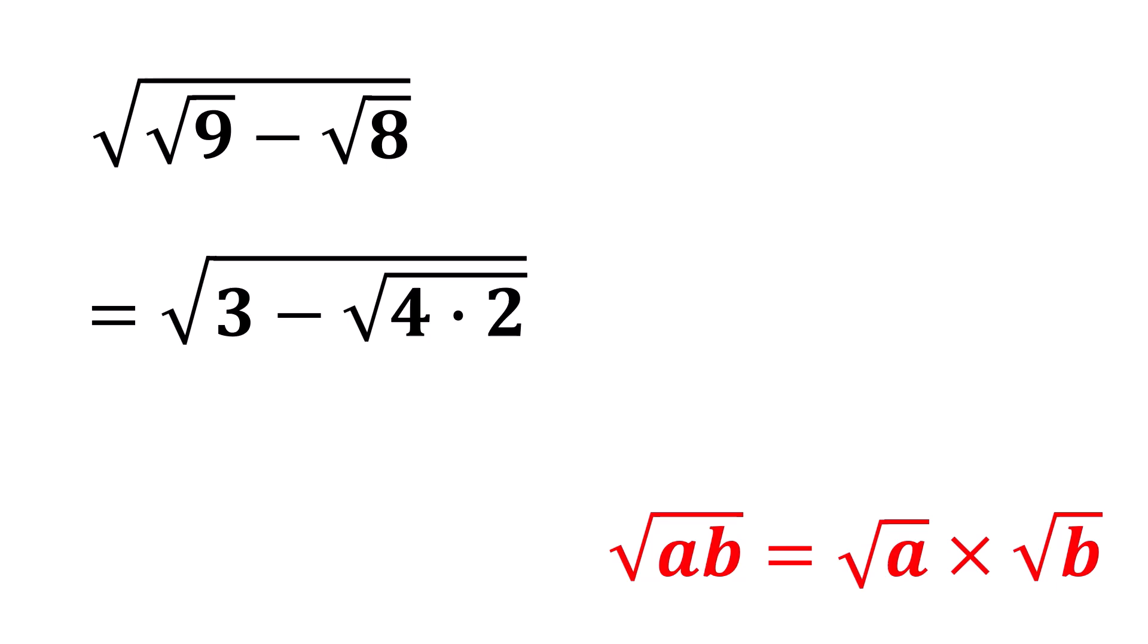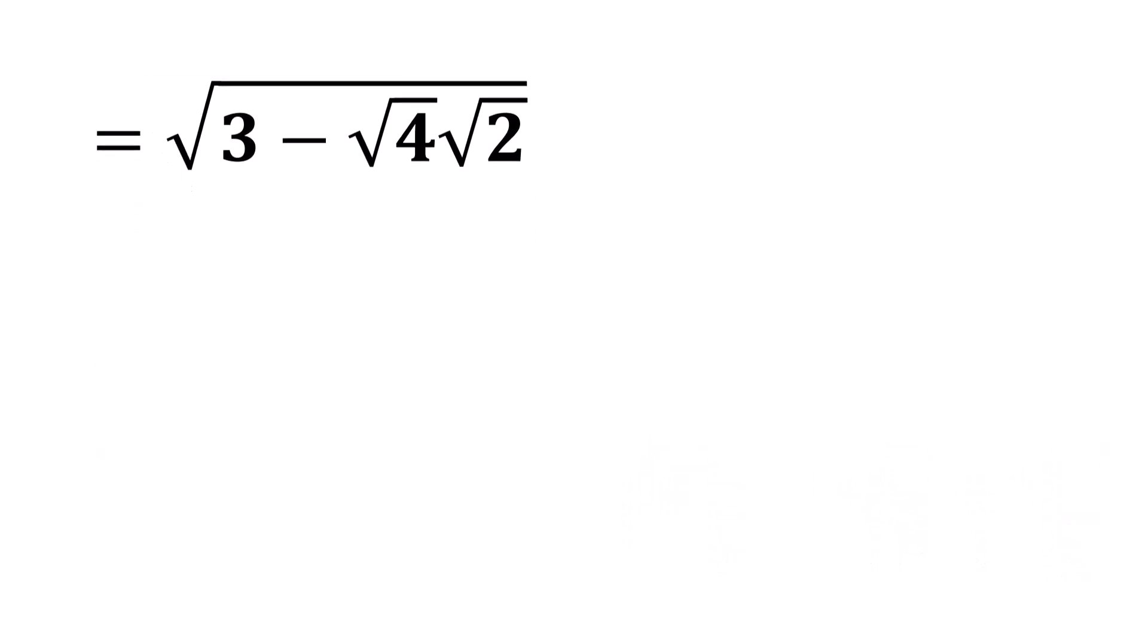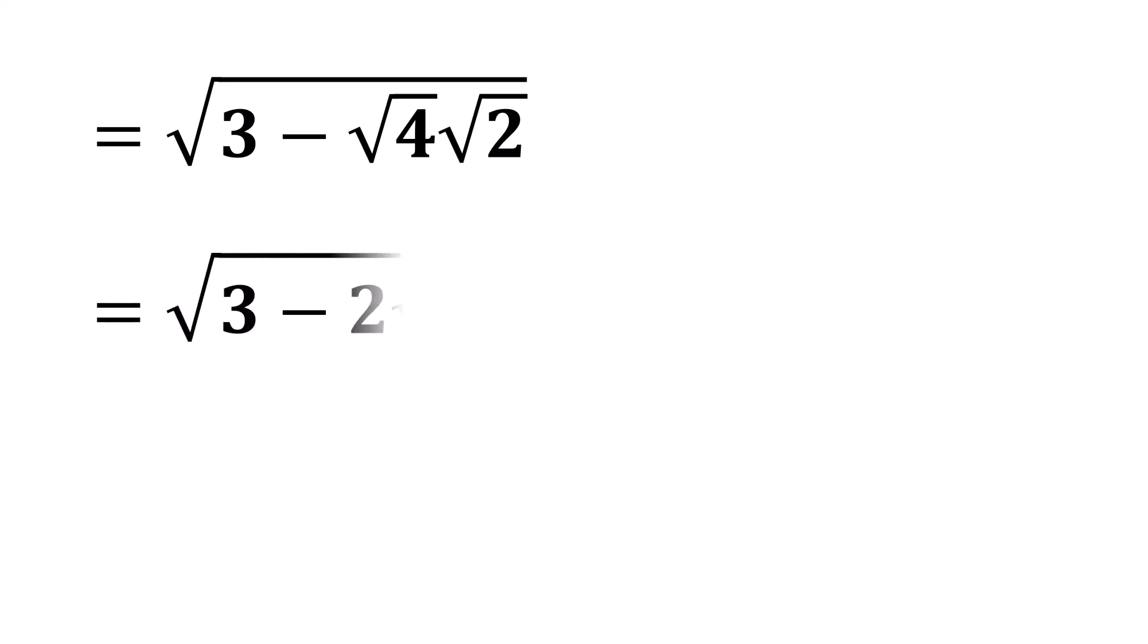we can rewrite our expression as the square root of 3 minus the square root of 4 times the square root of 2. Since the square root of 4 is 2, our expression becomes the square root of 3 minus 2 times the square root of 2.